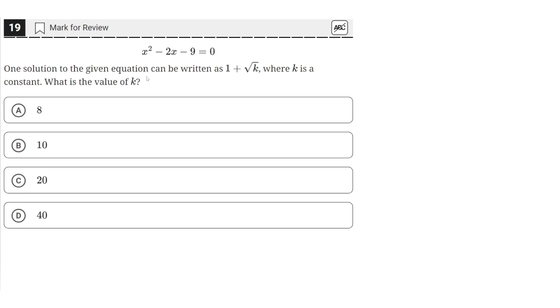One solution to the given equation can be written as 1 plus the square root of k, where k is a constant. What is the value of k? Okay, so we're given this quadratic here, and we need to find the solutions so that we can find the value of k.